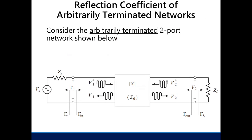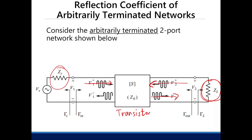Consider an arbitrary two-port network — this could be a transistor. We terminate it with some load Z_L and some source Z_S. If there is power injected into the transistor, some of it will be amplified. Once the amplified signal hits this load, some of it can go back if it's mismatched. If it's mismatched, some energy will go back and some of that energy will be seen by the voltage source, and that energy can also be reflected if the source side is also mismatched.